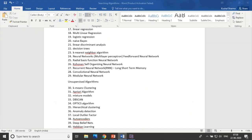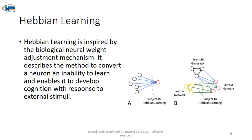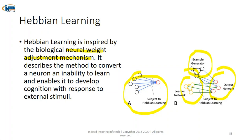The fortieth and final algorithm is Hebbian learning, inspired by the biological neural weight adjustment mechanism. It describes a method to convert a neuron's inability to learn and enable it to develop cognition in response to stimuli. In the diagram, we have a subject undergoing Hebbian learning, a learner network, an example generator, and an output network. It creates examples, responds to them, learns from responses, and produces an output.